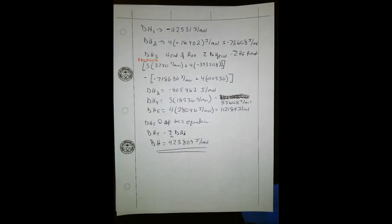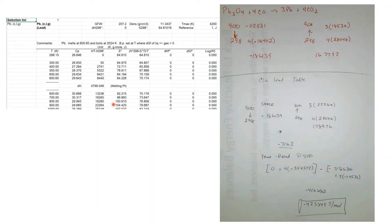I'll show you the other table. Working it out again with the standard state table — there's no heat of formation and it's a standard state, but the sensible heat at 900 Kelvin is a bit different than the liquid table. When you work it out, you get pretty close to the same answer: negative 423,845 joules per mole for the standard state table, compared to negative 423,809 from the liquid table.